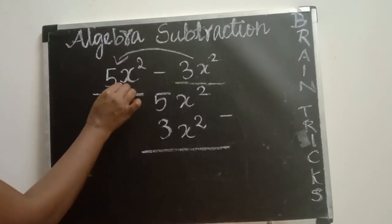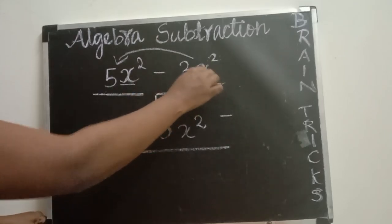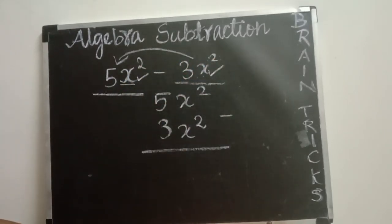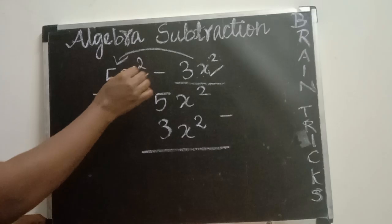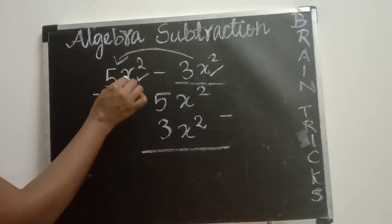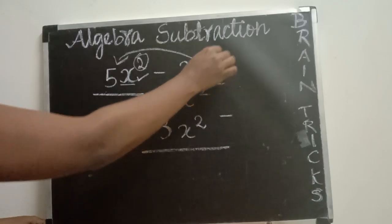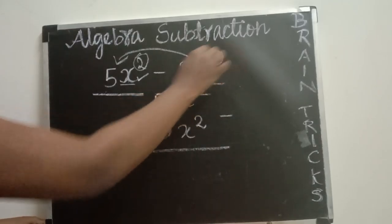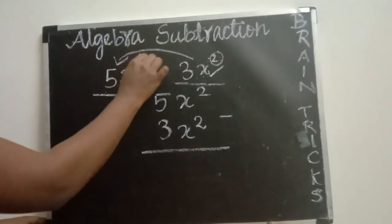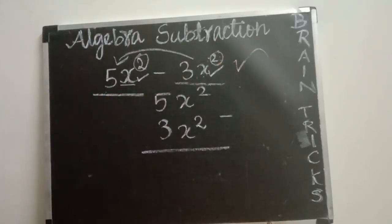This term has variable x, and here also we have x. So both terms have the same variable x. Next, you have to check the power of the variable. Here x has power 2, and here x also has power 2. Both terms have the same variable and the same power, so you can do subtraction.